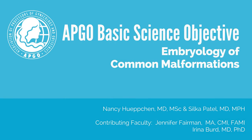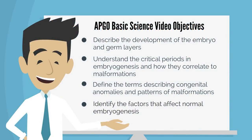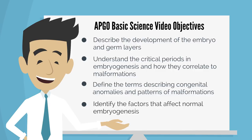Hello and welcome to this APCO basic science video about the embryology of common malformations. After watching this video you should be able to describe the development of the embryo and germ layers — ectoderm, mesoderm, and endoderm — understand the critical periods in embryogenesis and how these correlate with the development of particular malformations, define the terms describing congenital anomalies and patterns of malformations, and identify the factors that affect embryogenesis and the mechanisms that alter normal embryogenesis.